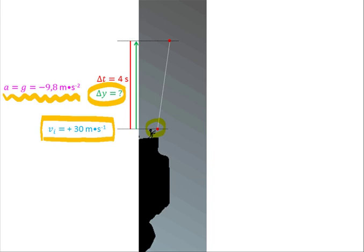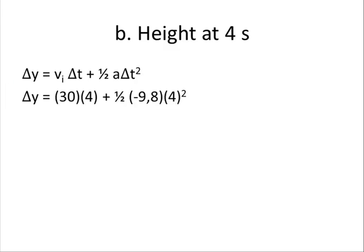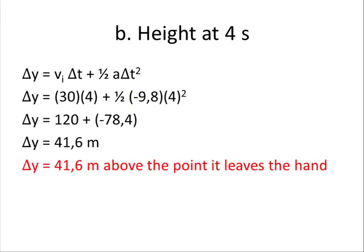Again we need to find delta y. Using the appropriate equation of motion and substituting values — remembering the −9.8 for acceleration — our answer is in meters. The positive value tells us the ball ends higher than where it started: 41.6 meters above the point it left the hand.